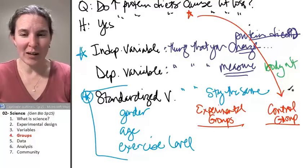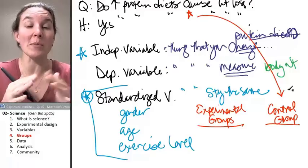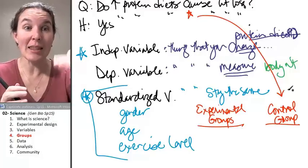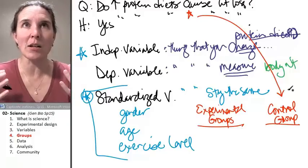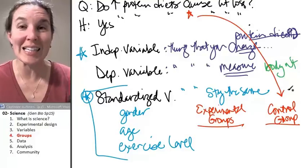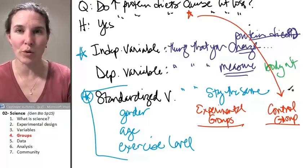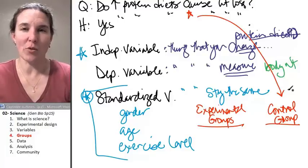The concept of a control group becomes a little bit fuzzier in this scenario. Some experiments have a really clean, nice, easy control group. Let's find out if light helps plants grow. Let's just not expose some plants to light and see what happens.